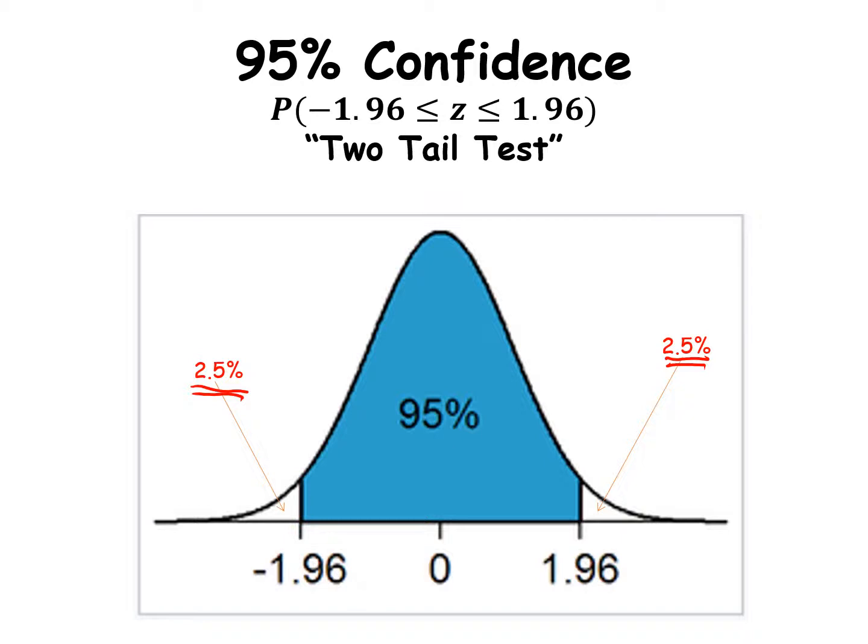A lot of what we do will relate back to this image: 95% in the middle and 2.5% at each end — that 5% represents the incorrect portion, the 5% significance.